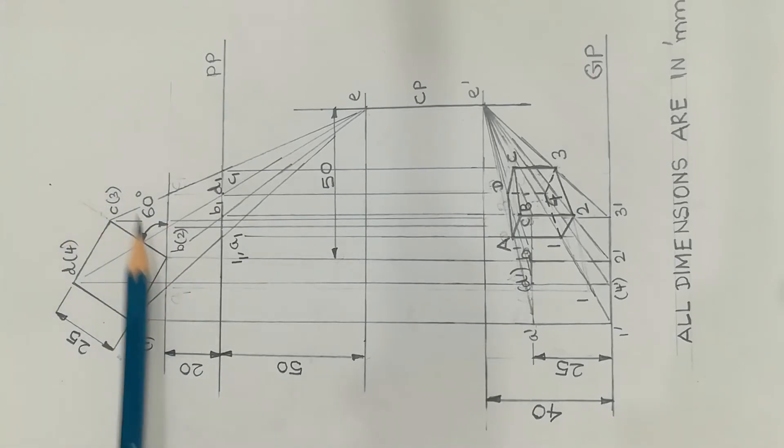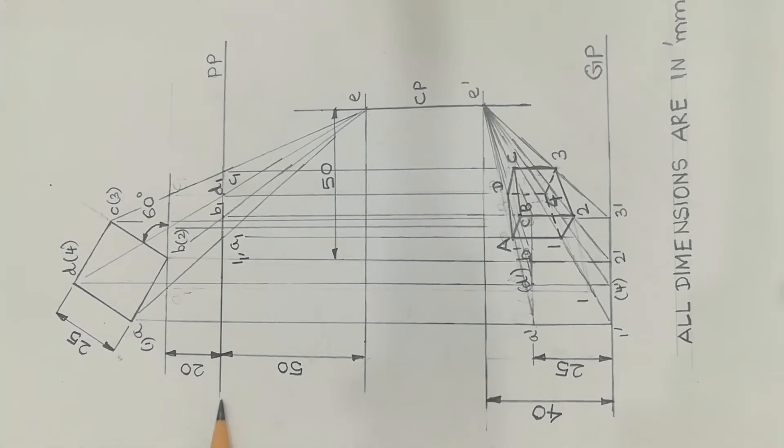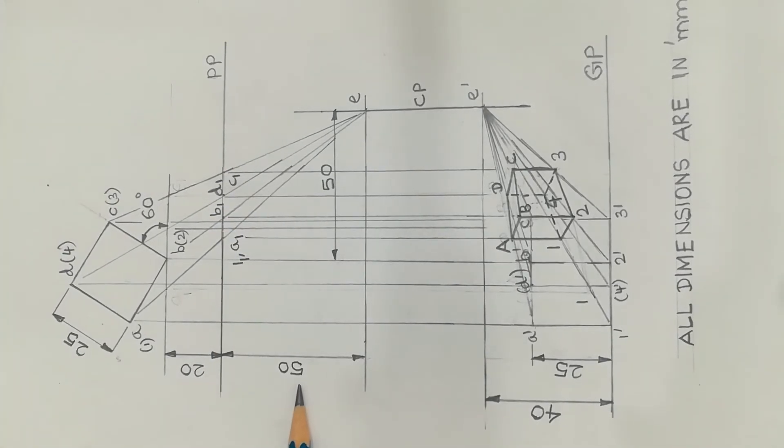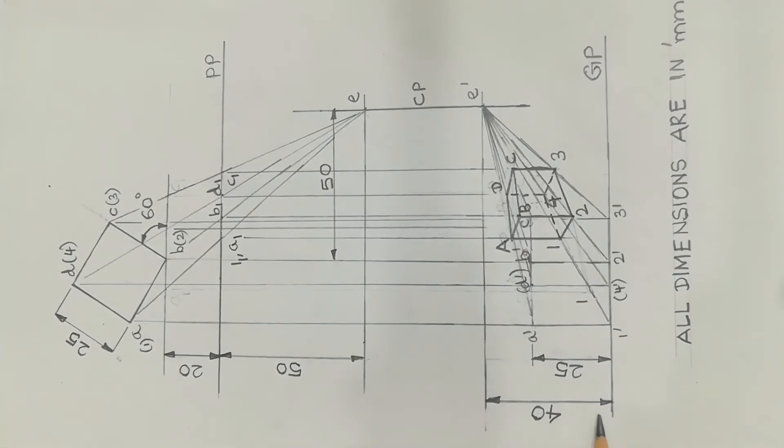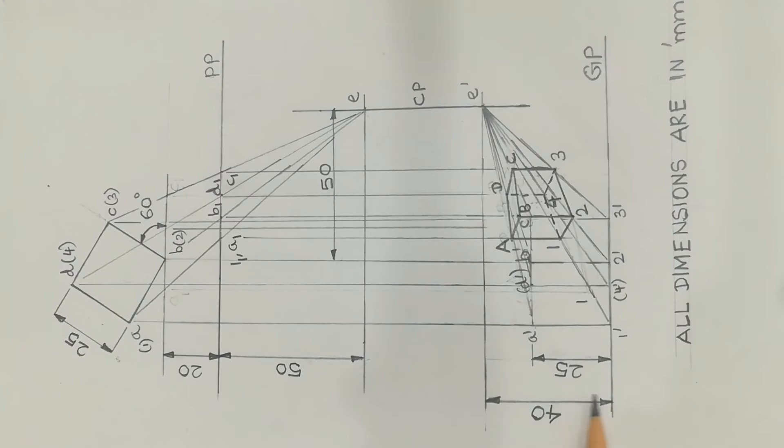And in the distance, 50 mm is the distance in front of PP. This is 40 mm, the distance above the ground plane. GP is the distance.